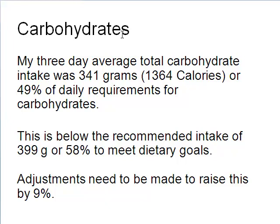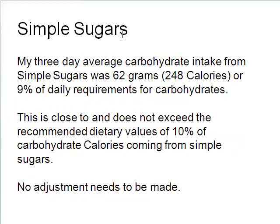This is below the recommended intake of 58%, so adjustments need to be made. This is what I'd like to see you write in your report under the heading of carbohydrates — just a summary showing me you know where you're at. List the grams, the calories, the percentage, and then tell me where we need to be. We need to be at 399 grams to hit 58%, so there's roughly a 58-gram difference we need to make up somehow. The next thing to look at is whether we need to raise or lower our simple sugars.